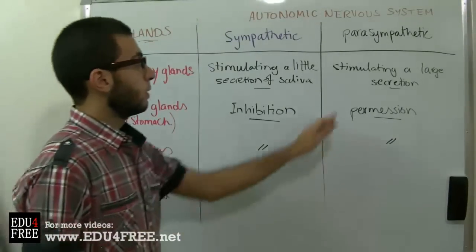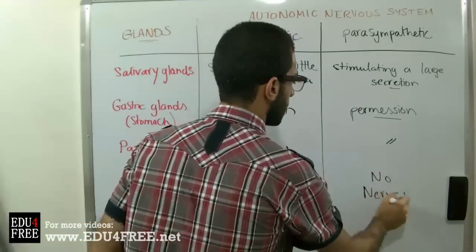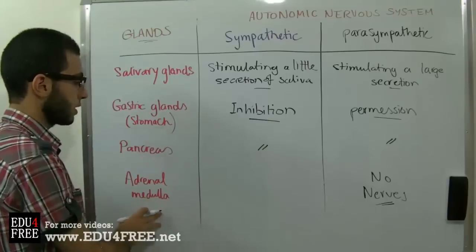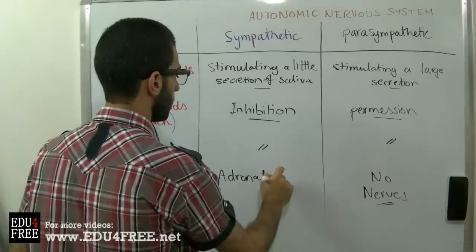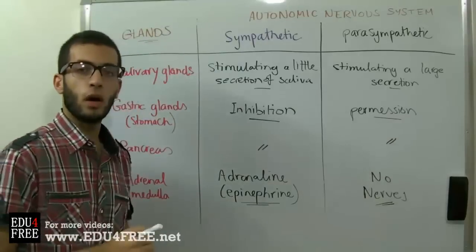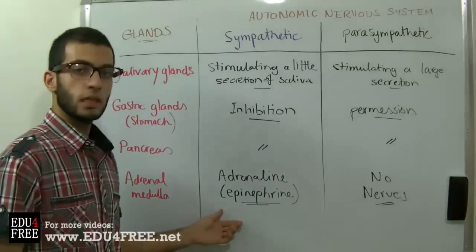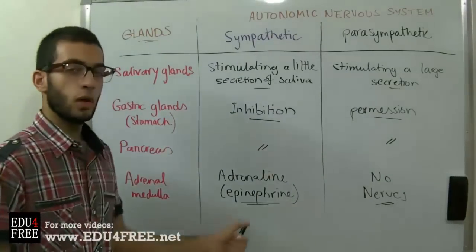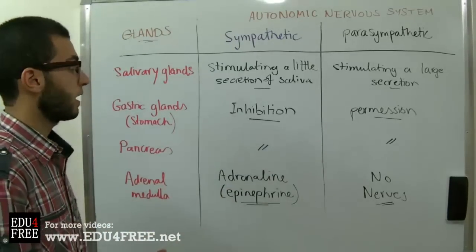Finally, the Adrenal Medulla — the gland over the kidney. The Parasympathetic Nervous System has no nerves connected to the Adrenal Medulla, but the Sympathetic Nervous System does. Its effect is to increase the secretion of Adrenaline, or Epinephrine. This enzyme increases heart rate, increases the ratio of glucose in the blood, and accordingly increases blood pressure. All of this is why the Sympathetic Nervous System is called the Emergency Nervous System — because in cases of emergency, the secretion of Adrenaline helps the body deal with the situation.